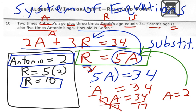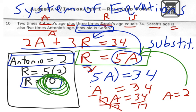And we are almost done. We just need to make sure we've answered the question. So which answer are we looking for? Is it 2 or 10? I'm going to look back at my question. It says, How old is Sarah? We let R stand for Sarah. So Sarah is going to be 10 years old. Alright. Great job. Thanks for listening.